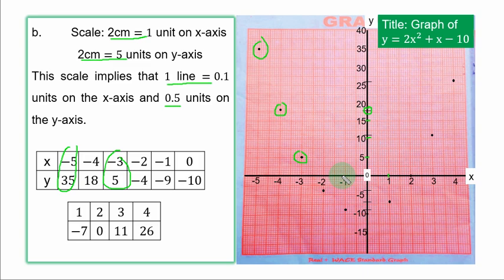When s is minus 2, y is minus 4. If you count, you have it somewhere here. When s is minus 1, y is minus 9, very close to minus 10. When s is 0, y is minus 10. You plot that directly on the y axis. When s is 1, y is minus 7. When s is 2, y is 0. You plot that directly on the s axis.